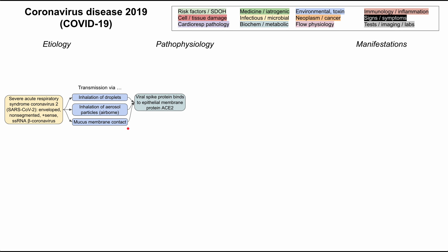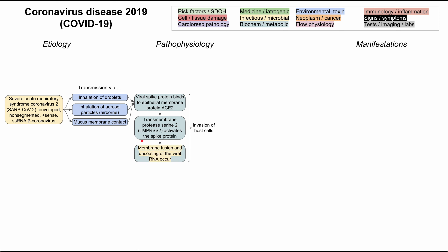When the virus is transmitted, the viral spike protein binds to the epithelial membrane protein ACE2, and this sets off the invasion of the host cell. Once that spike protein is bound to ACE2, the transmembrane protease serine-2 activates the spike protein, and membrane fusion occurs. There is then uncoating of the viral RNA, and the cellular enzymes release viral components into the host cell.